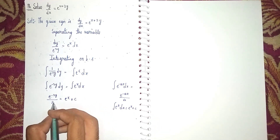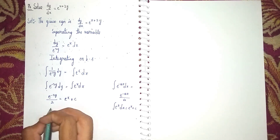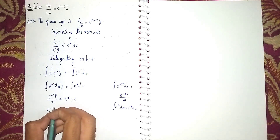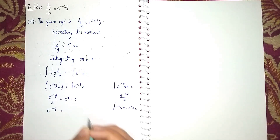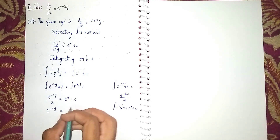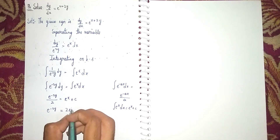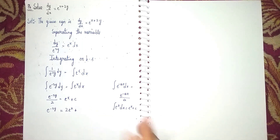Now, the 2 in the denominator is sent to multiply on the other side. So it becomes: e^(-2y) = 2e^x + c.